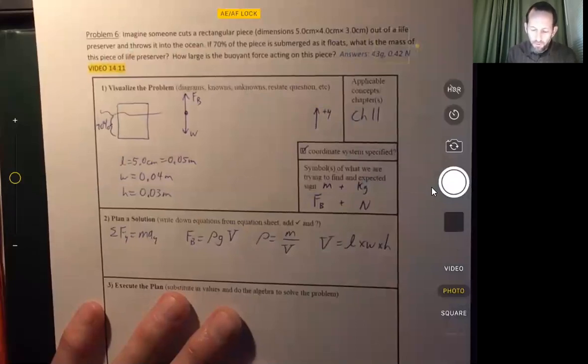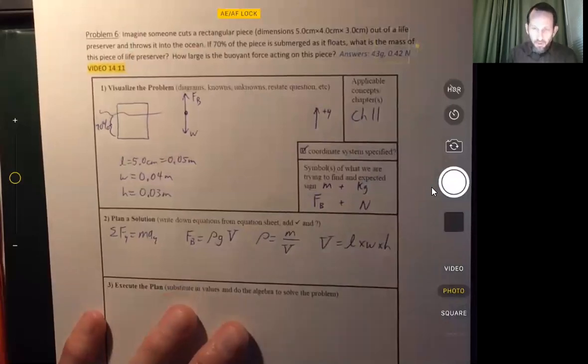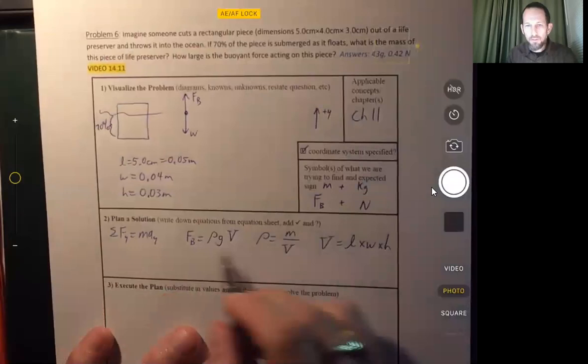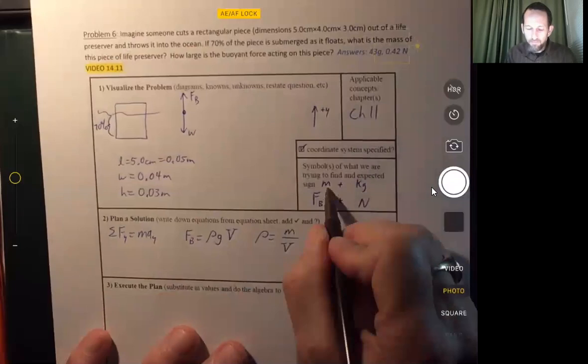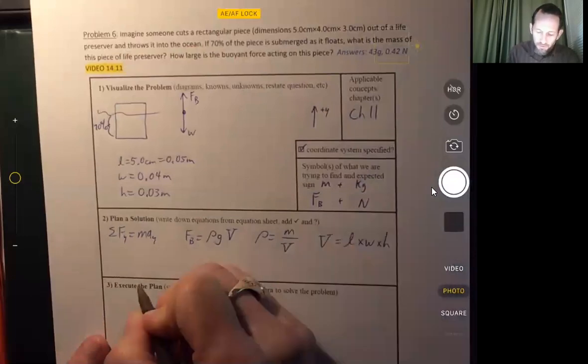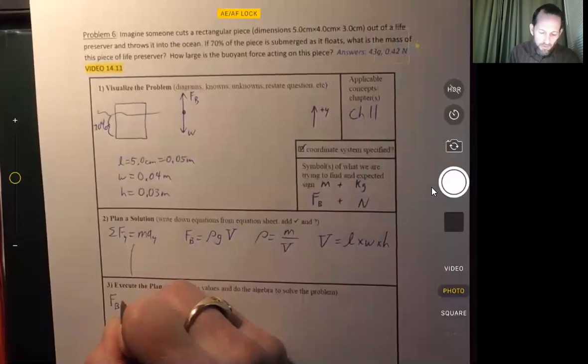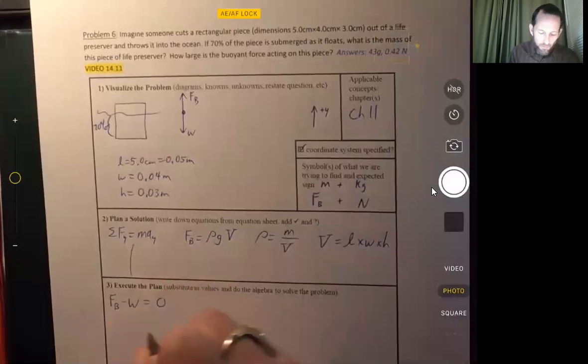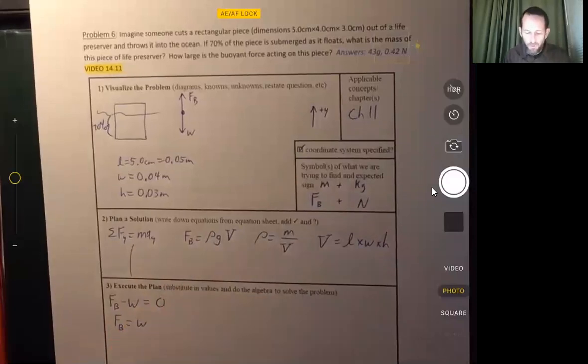Alright, well, let's see what we can do about figuring this out. I've written down some of the usual equations that we've been using in this unit. We know we're going to be looking for the mass and we're also going to be looking for the buoyant force. Let's go ahead and see what we can do with these equations. We can sum the forces. The buoyant force minus the weight is equal to zero. So the buoyant force is equal to the weight of the object. So we know that much.